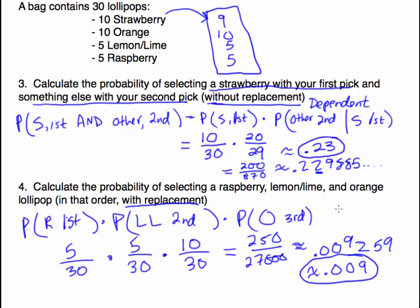This was with replacement, so as I continue successive multiplication, the denominators don't change in this lollipop example. The phrases 'without replacement' and 'with replacement' indicate whether or not the probabilities will change from one selection to the next.